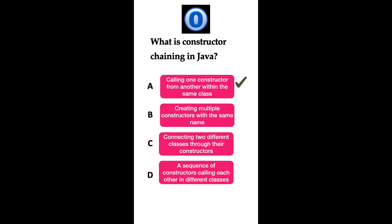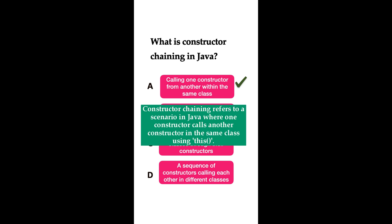The correct answer is option A: calling one constructor from another within the same class. Constructor chaining refers to the scenario in Java where one constructor calls another constructor in the same class using the this() function. If you have multiple constructors in a class and want to call one from another within the same class, you use this() — the this keyword as a function.